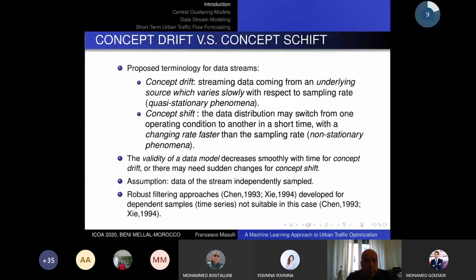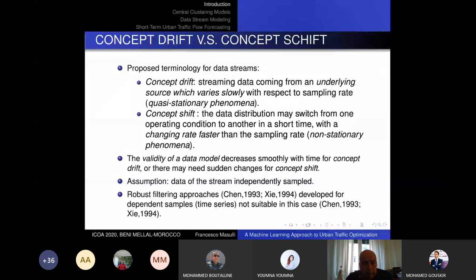In our approach we distinguish two cases: constant drift and constant shift. Constant drift is related to data that changes slowly with respect to the sampling rate of our system, so we have quasi-stationary phenomena. Constant concept shift is related to cases where the change of data distribution is very fast — faster than the sampling rate. The model will be valid for a limited time in the case of constant shift, while it will remain stable for more time with constant drift.